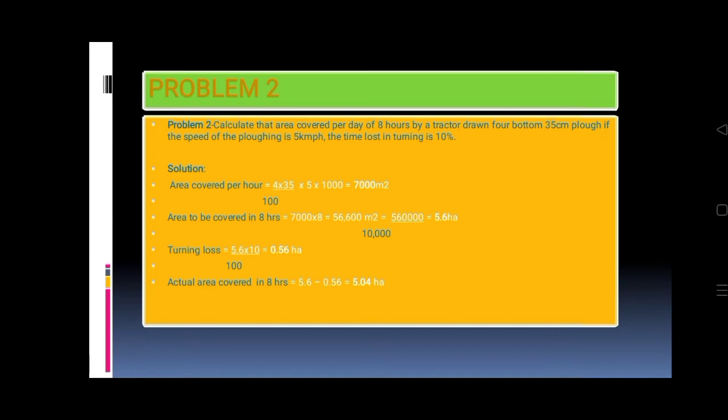Solution: Area covered per hour equals 4 times 35 divided by 100 times 5 times 1,000 equals 7,000 meters squared. Area to be covered in 8 hours equals 7,000 times 8 equals 56,000 meters squared equals 56,000 divided by 10,000 equals 5.6 hectares.